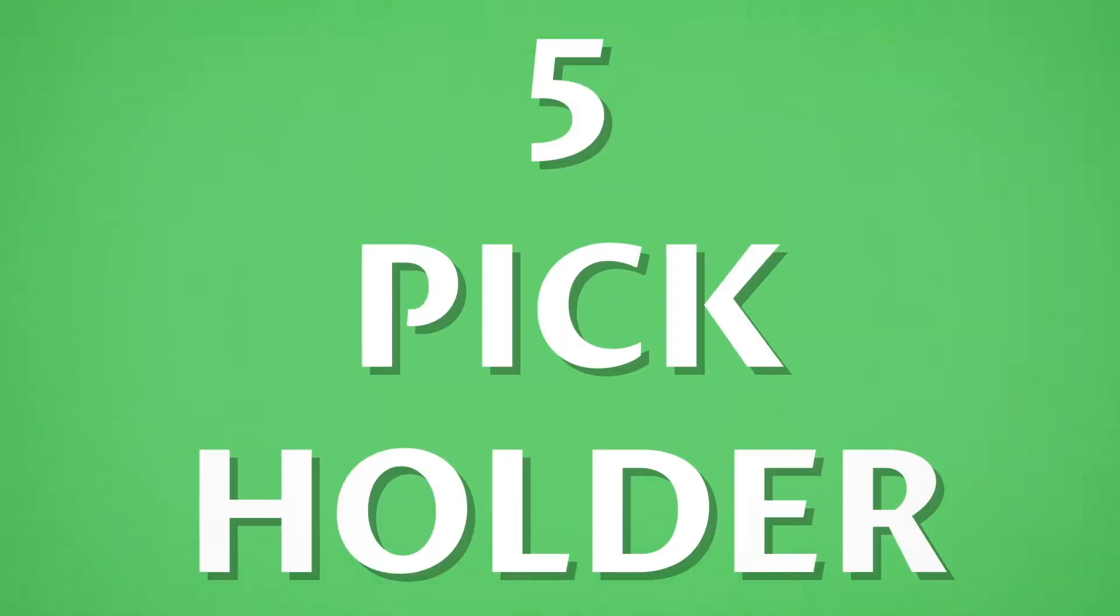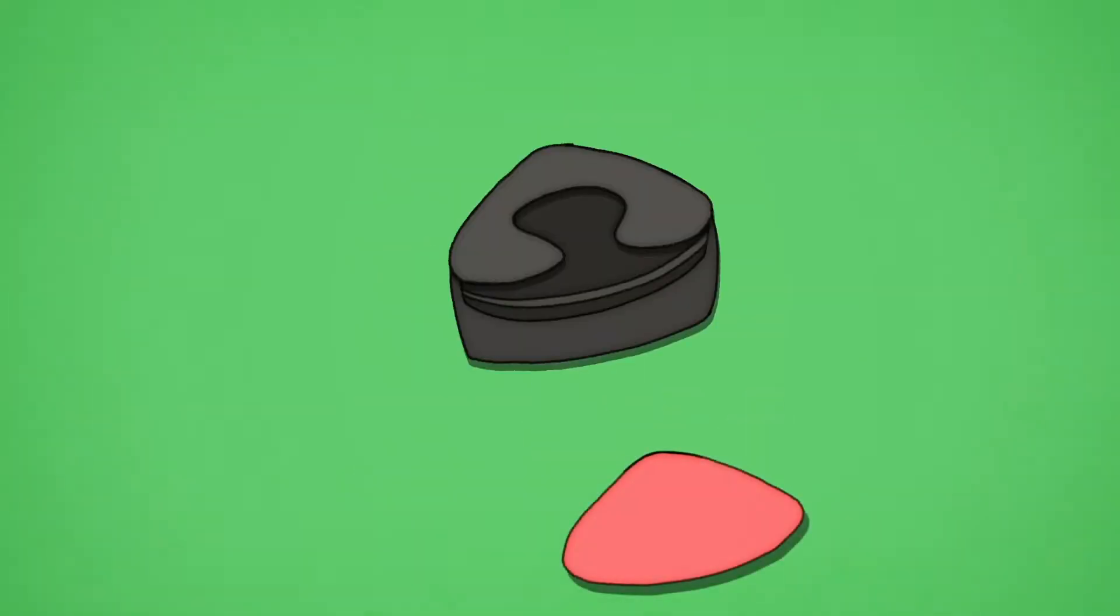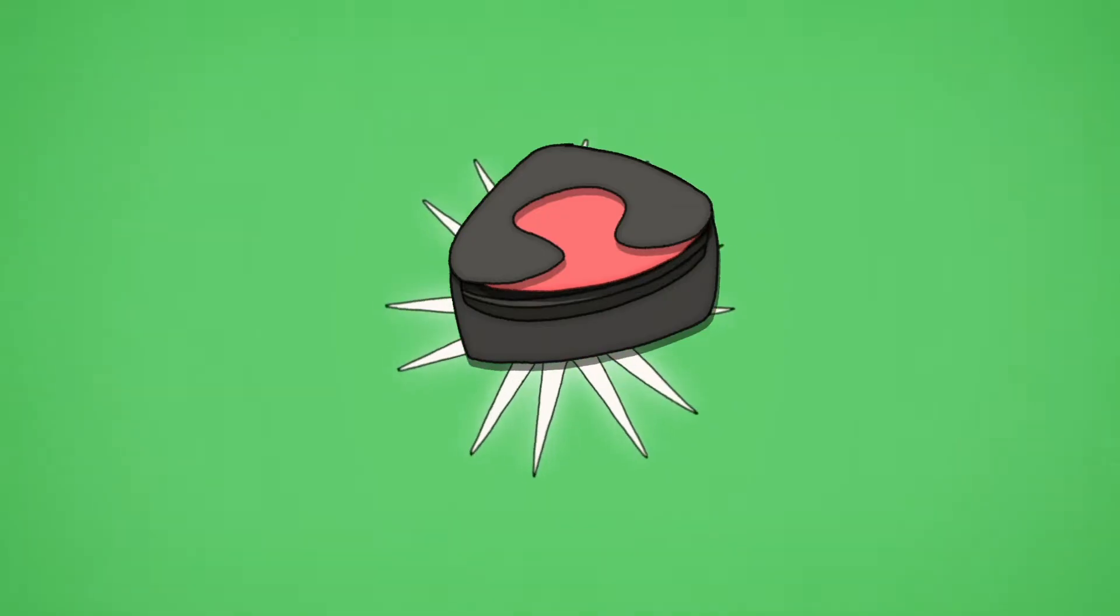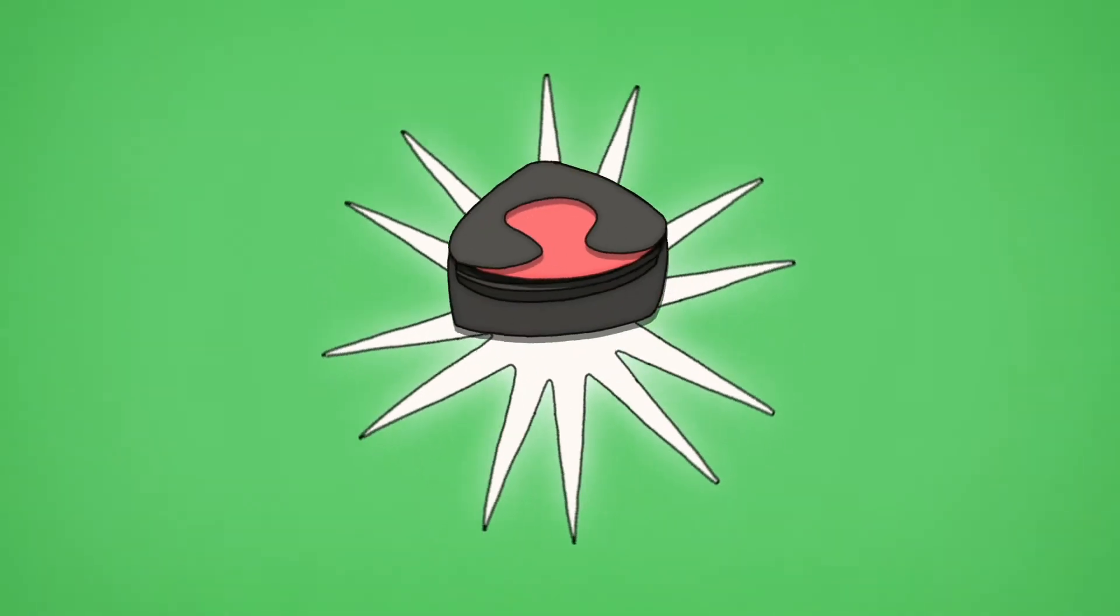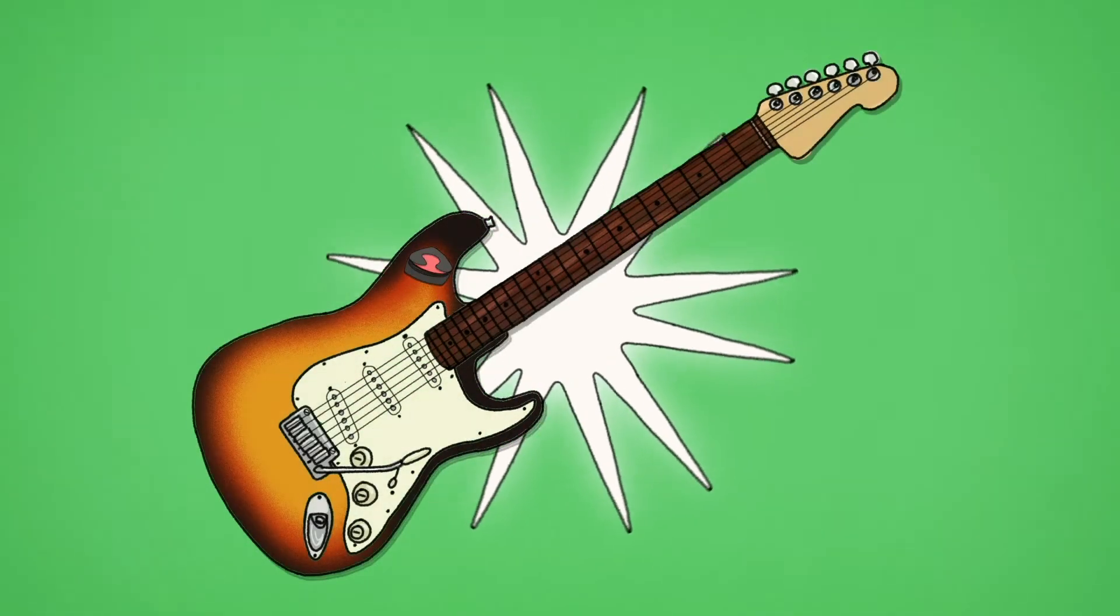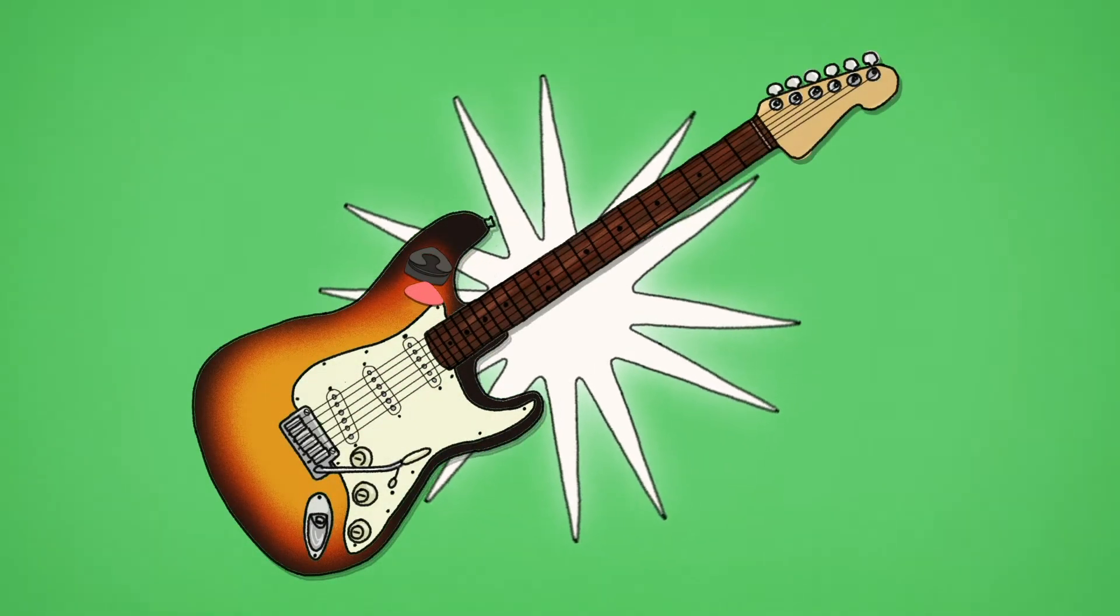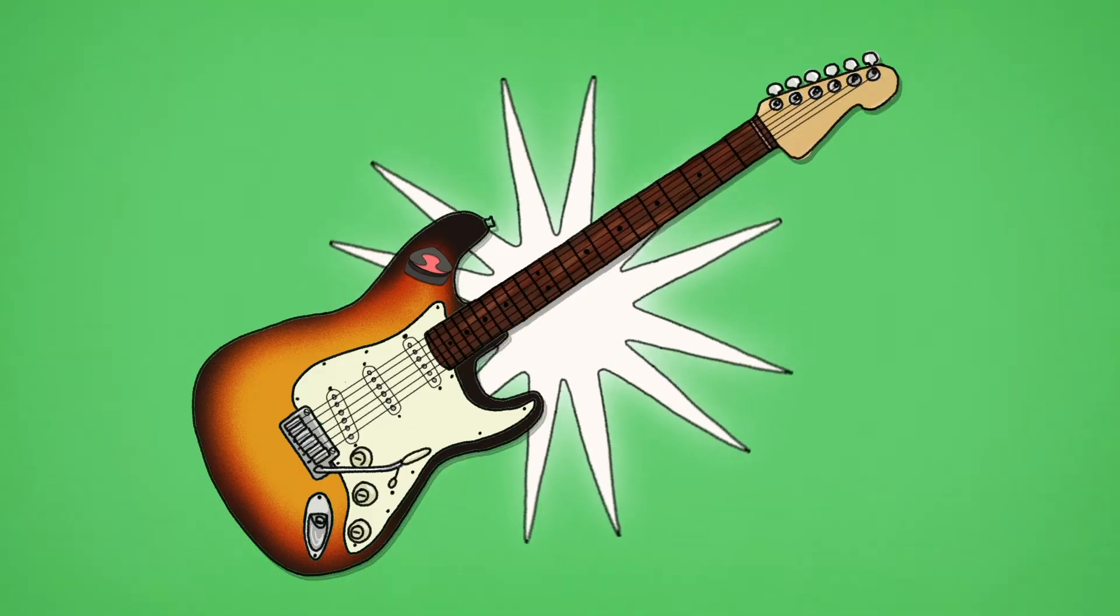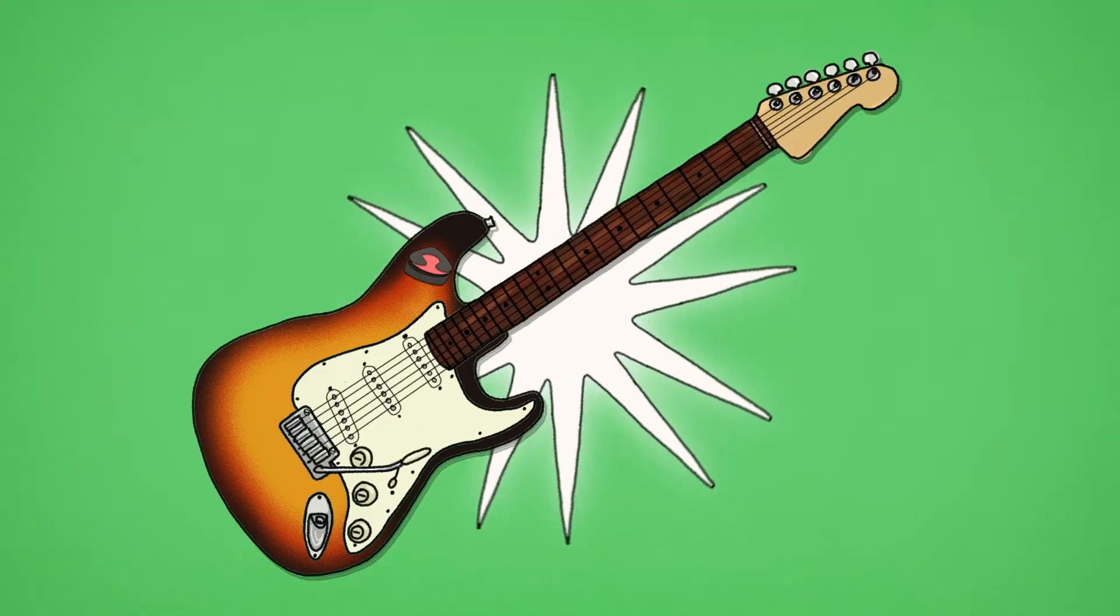Number 5: Pick holder. While picks are easily lost, you'll lose considerably less of them if you have a pick holder. A pick holder is a small plastic pouch that can be attached to your guitar with an adhesive strip. The pouch can hold a lot of picks, and once they're in the pouch, it's hard for them to fall out, so they're safe and won't be lost easily.